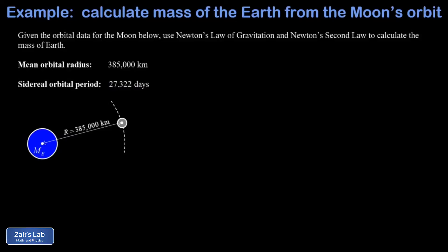In this video we're given the orbital data for the Moon, so we have the mean orbital radius and the sidereal orbital period. That's the orbital period with respect to the distant stars rather than the Sun, so that really measures how long it takes to go around the Earth once.